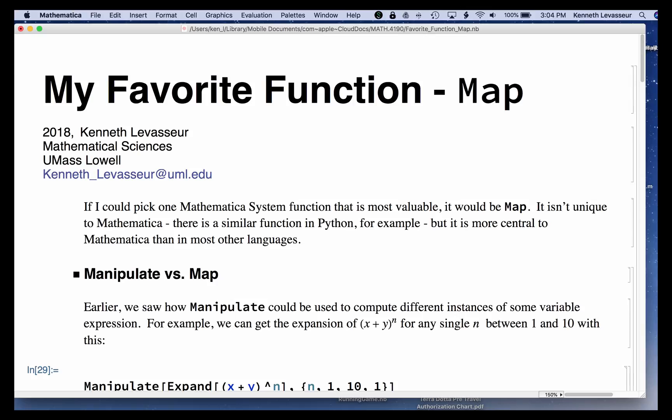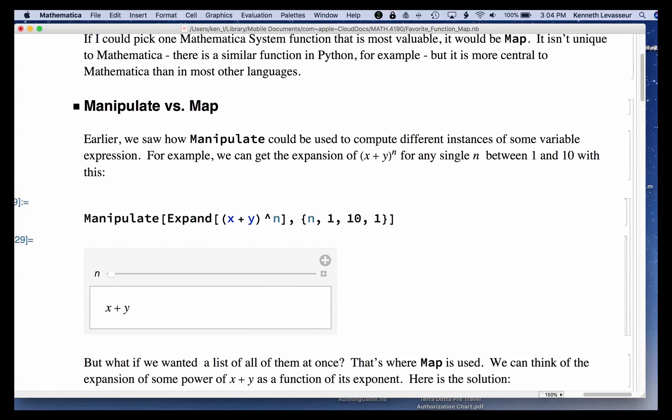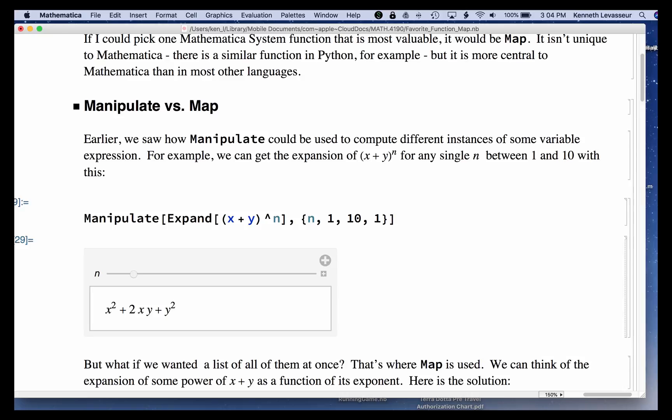I thought I'd like to start by contrasting Map and Manipulate. Manipulate is an example where we have an expression x plus y to the n, where n could vary. By putting that Expand expression into the first argument and the Manipulate controller n from 1 to 10 in steps of 1, we can evaluate this and get a panel with a slider and instantly get the expansions of x plus y to the n for any particular n.